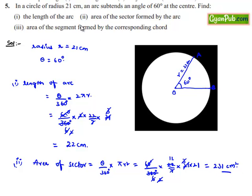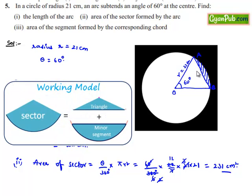Third, we are asked to find the area of the segment formed by the corresponding chord. Since the arc is AB, the chord will also be AB, and we need to find the area of the shaded region. To do this, we find the area of the sector and subtract the area of triangle OAB to get the area of the required segment.